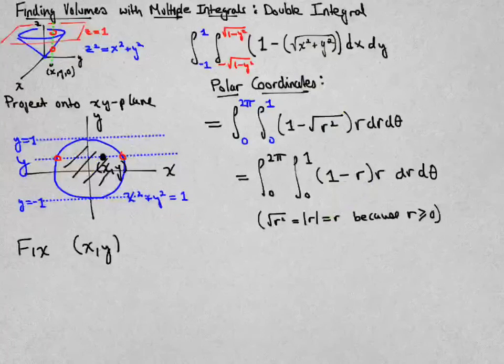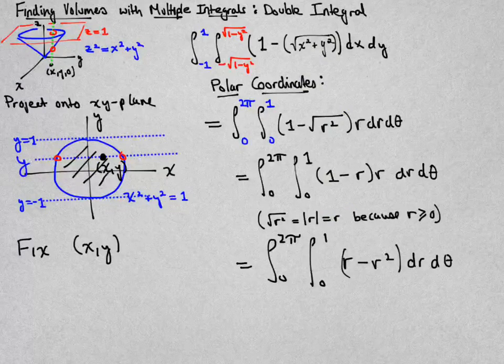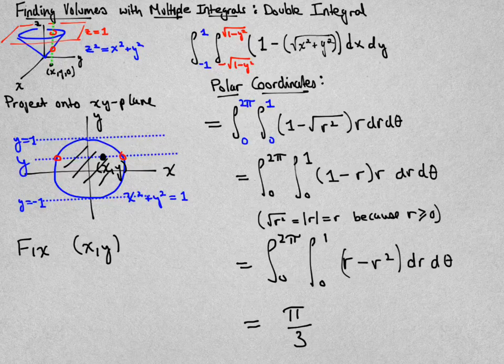And its absolute value is really itself. So I can replace the square root of r squared with r, and then we'll expand the terms. I'll have r minus r squared, and that's a straightforward integration. Just integrate each of those two terms, and you should get pi over 3. You can check me that I have the correct answer.